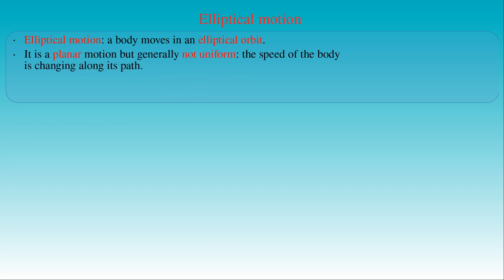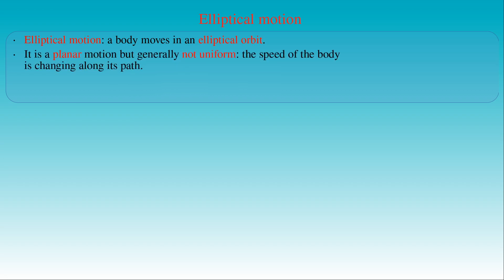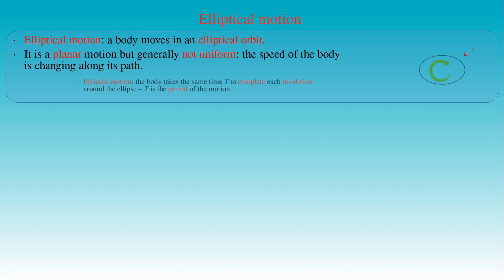It is a planar motion but not necessarily a uniform one. In nature or in everyday life we normally meet such types of elliptical motion where the speed of the traveling body is changing along its path. However, it is a periodic motion, which means that the body takes the same time t to complete each revolution around the ellipse, where t is the period of the motion.